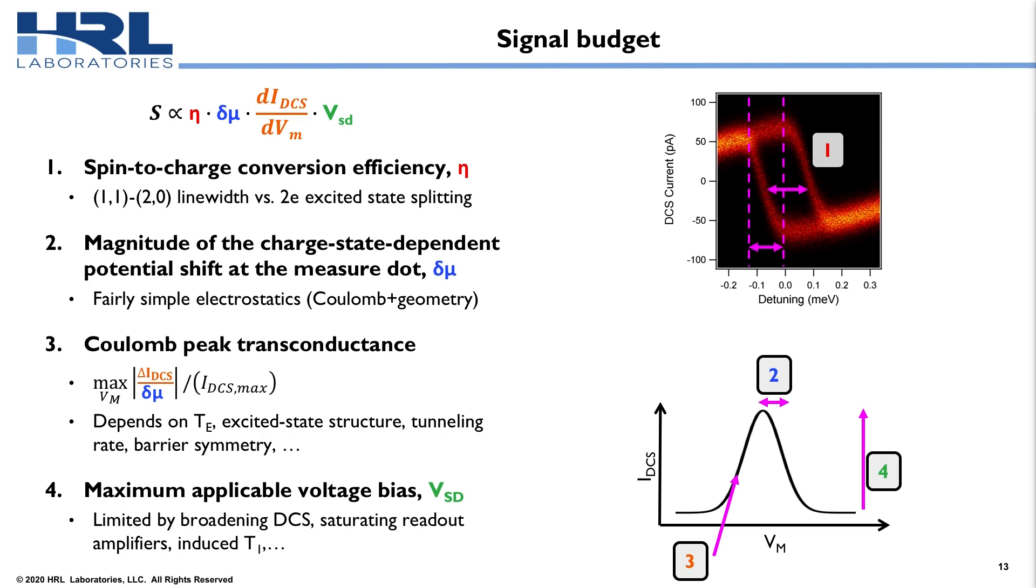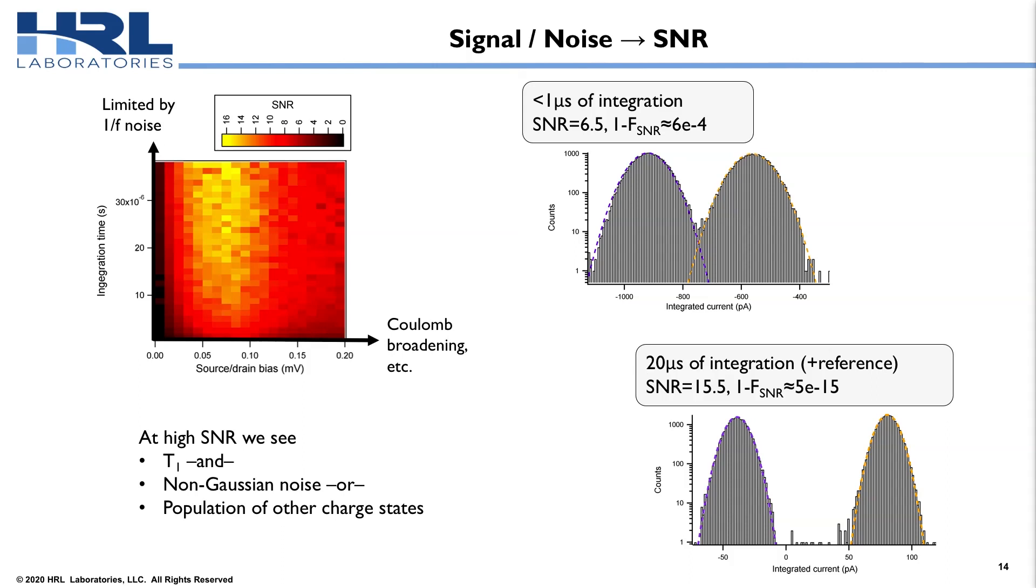The second component is the magnitude of the potential shift at the dot charge sensor. Once I change the charge states under the P dots, how much does that affect the DCS current? This is the easiest component here. It's just a matter of basically Coulomb's law, geometry of your device, and accounting for image charges. The third one is exactly how sharp can I make my Coulomb peak? This is a pretty old bit of physics. There's been a lot of work there. I'm not going to get into it. But it depends on a lot of factors like your temperature, the excited state structure, tunneling rate, symmetry of the dot charge sensor. So there's a lot going on there. And then the last factor is, well, once I have this conductance, how much voltage can I actually apply? There's a few things that can happen here. You can start broadening the charge sensor. You might even saturate your readout chain. And as we'll talk about again, you can induce a T1 process.